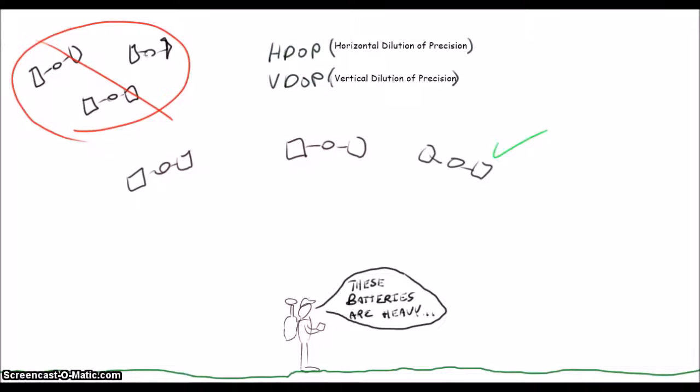HDOP and VDOP. Combining these metrics gives you a position dilution of precision, or PDOP, which is a common GPS statistic. A PDOP value of 2 to 4 is ideal for survey work.